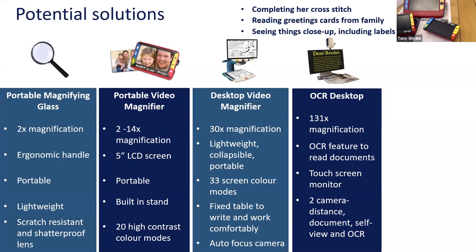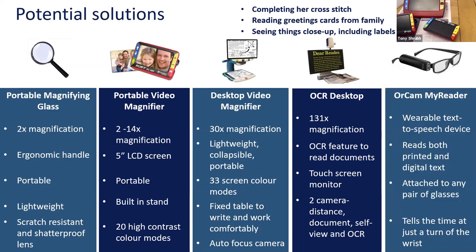From the chat box — Edward correctly identified OCR as Optical Character Recognition. With OCR you get a visual image on screen which you can magnify and change the colour, but the OCR feature will take a snapshot of the page and read it back to you — audio output in addition to screen magnification. Finally, we have a wearable device — the OrCam MyReader. It's a wearable text-to-speech device that attaches to a pair of glasses via magnets and reads printed text.